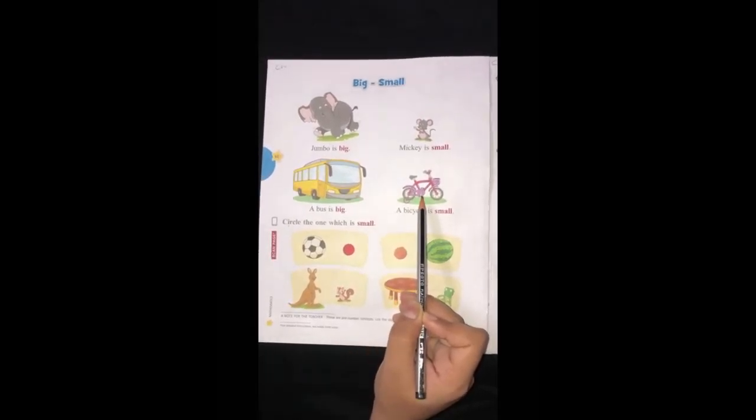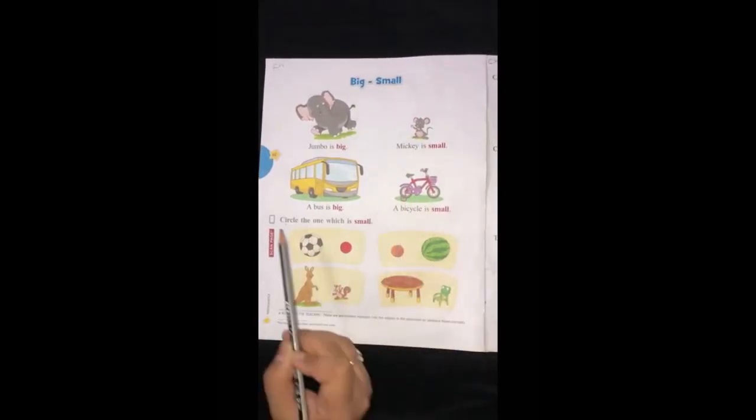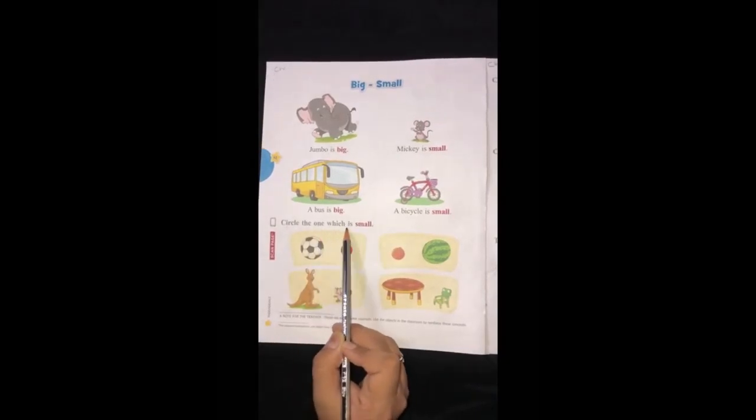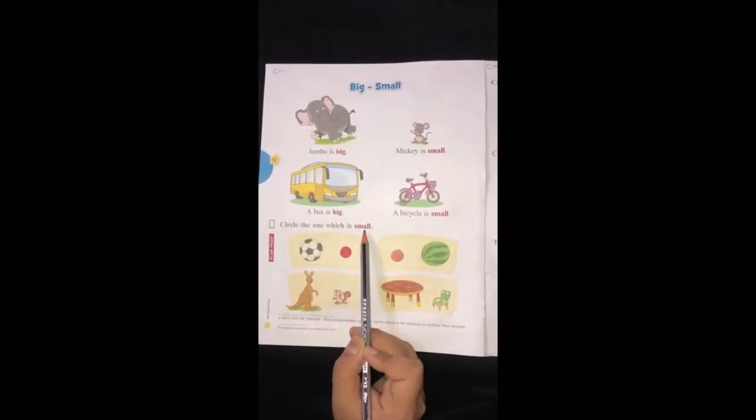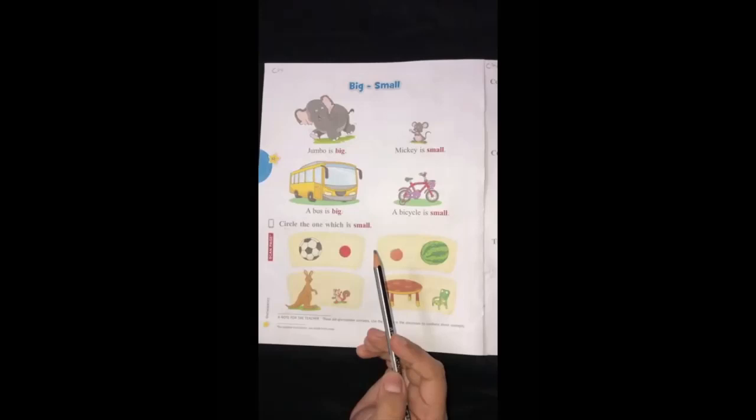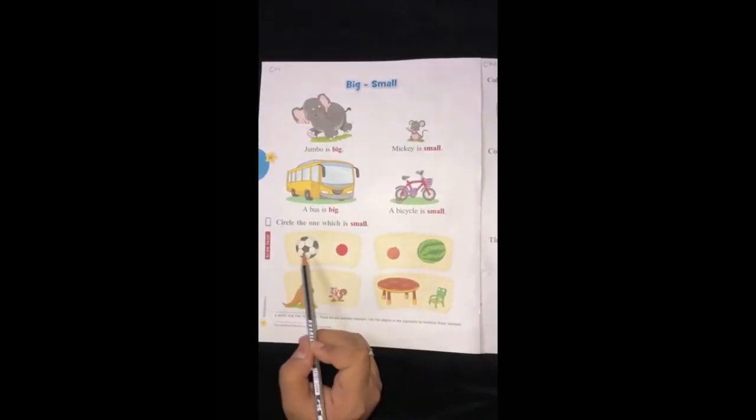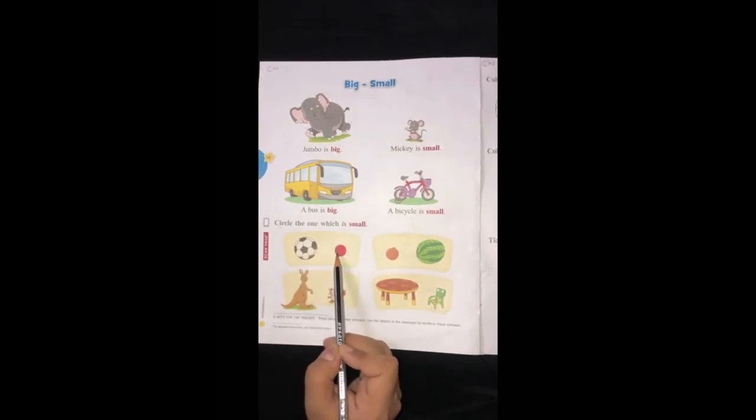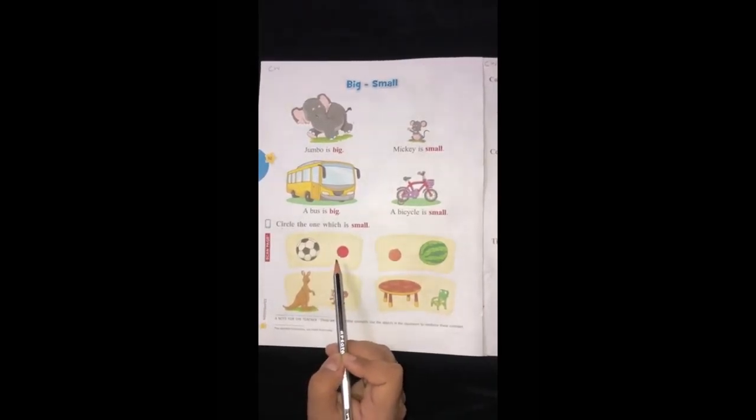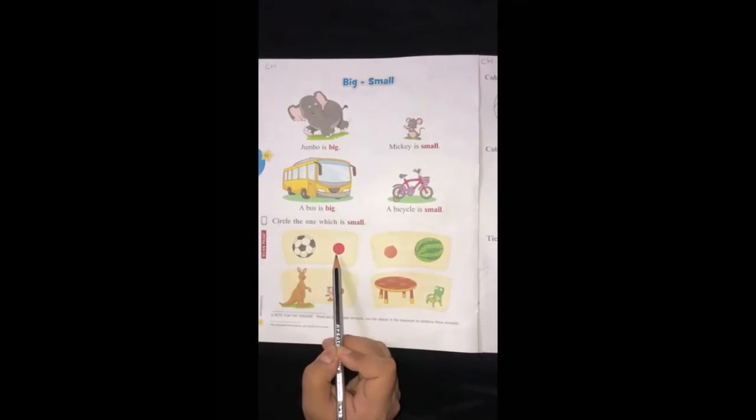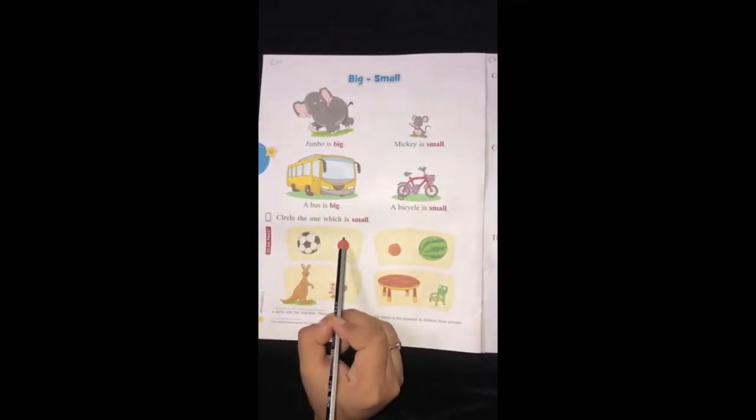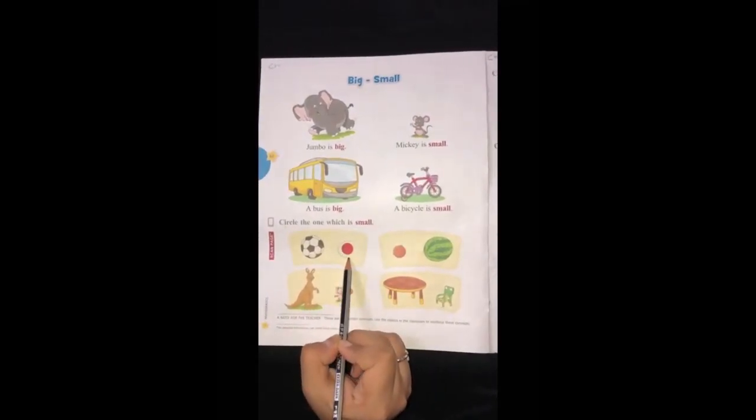Now, let's start with an activity. Circle the one which is small. In this, you have to circle the small object. There are two balls. Which ball is small in size? Yes! The red ball is small in size. So you have to circle the red ball.